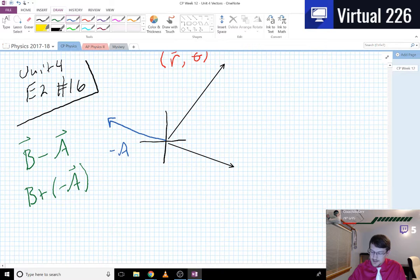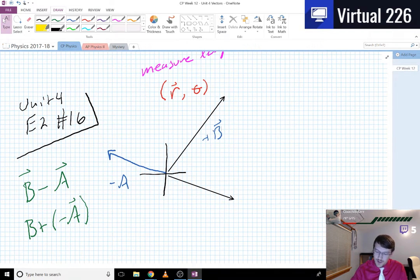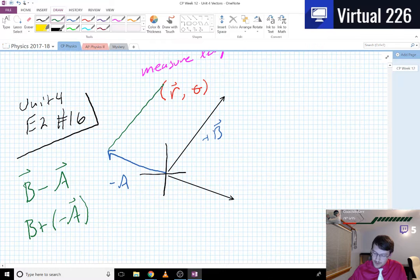This is positive B, and then it's head-tail method, so you could bring the B vector over, so you know, something like this.